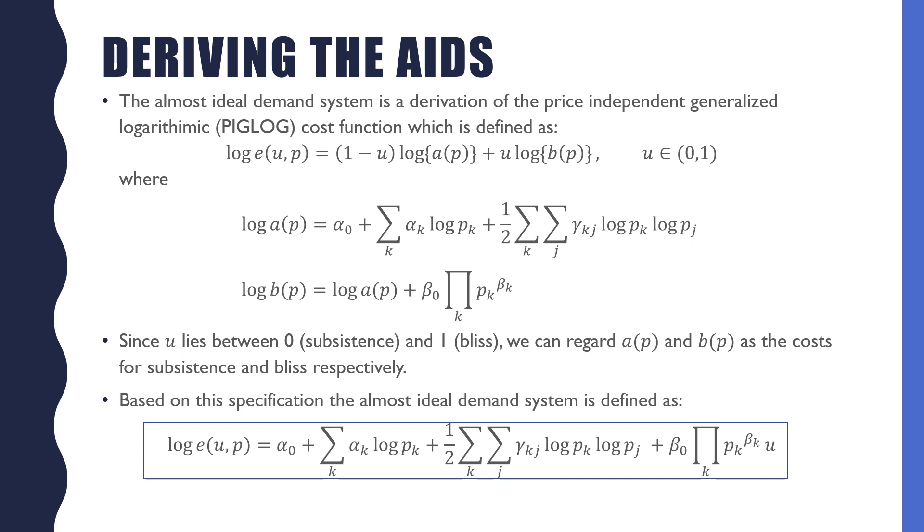Since u lies between 0 and 1, we can regard a(p) and b(p) as the costs of subsistence and bliss, respectively. Based on the specification, the almost ideal demand system is defined as the following.